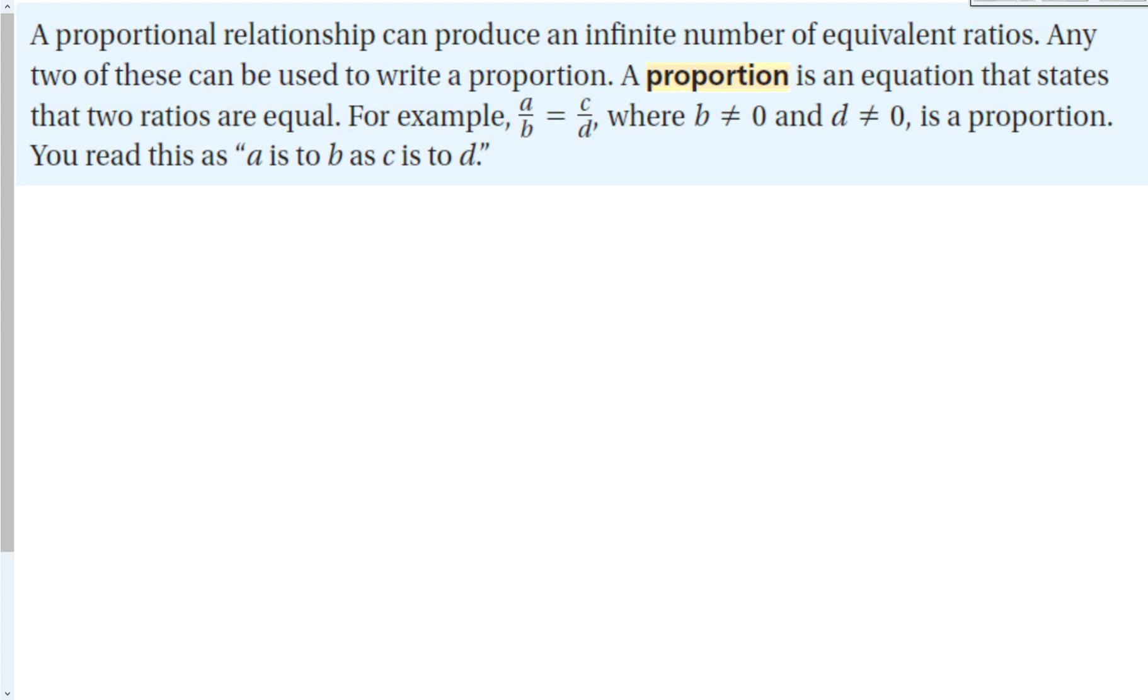A proportion is an equation that states the two ratios are equal. For example, a over b is equal to c over d, where b is not equal to zero and d is not equal to zero. Both of the denominators can't have a denominator equal to zero. That is a proportion. We can read this as a is to b, as c is to d.